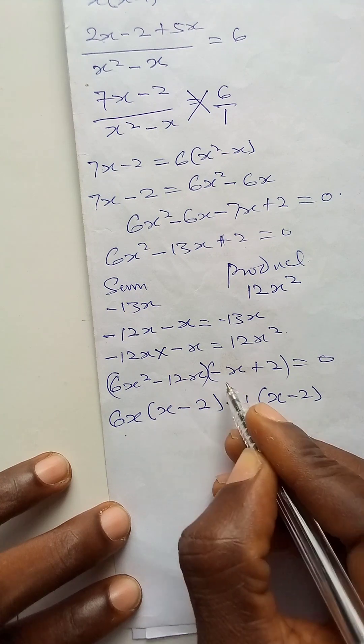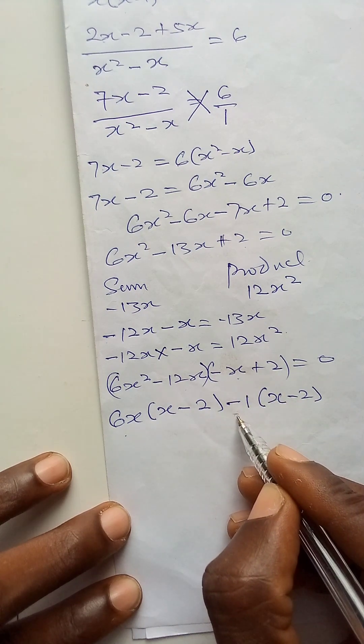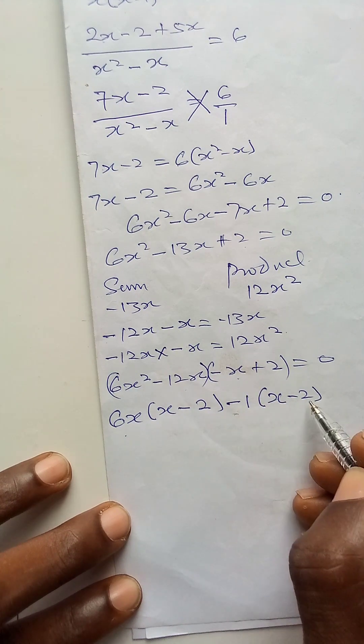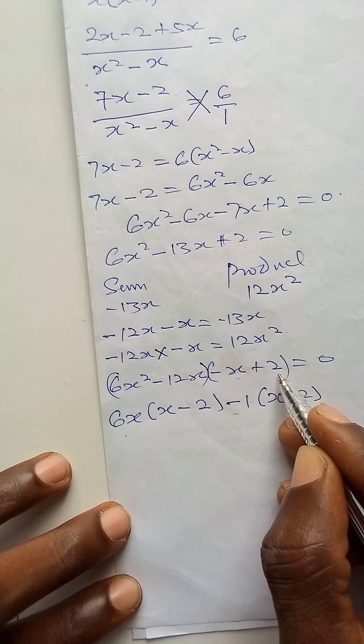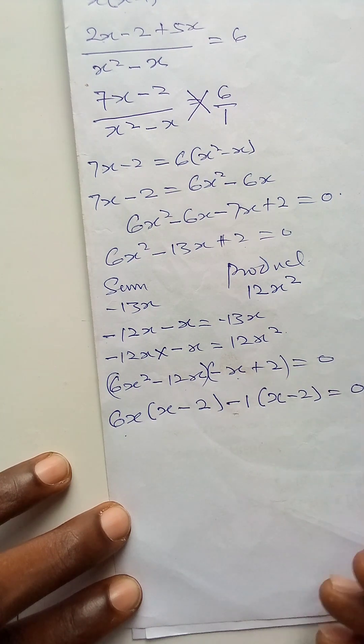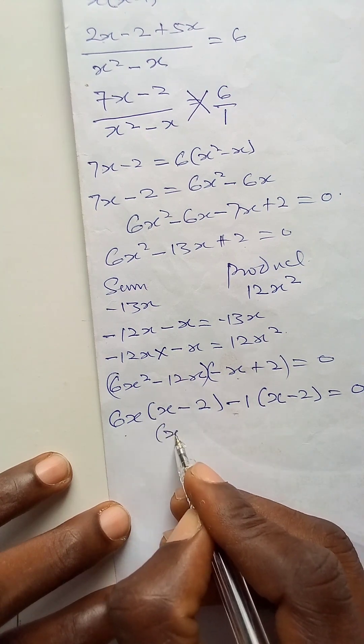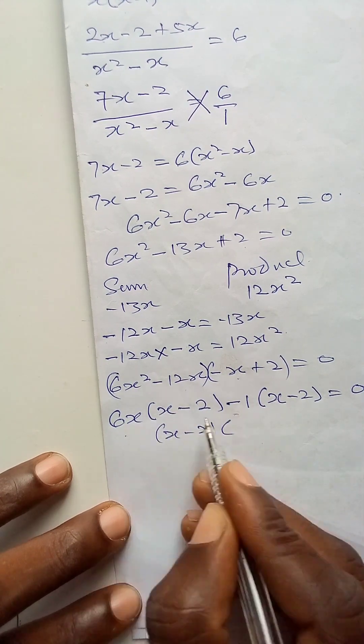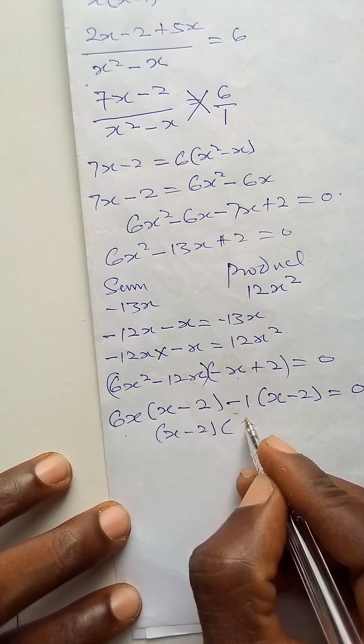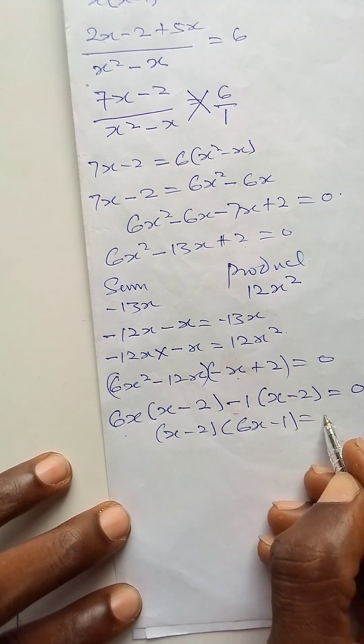Minus 1 times x is minus x, and minus 1 times minus 2 will give me plus 2 equals to 0. Then these two brackets are common or the same. I will take one, then put these other ones inside a bracket. 6x minus 1 is equal to 0.